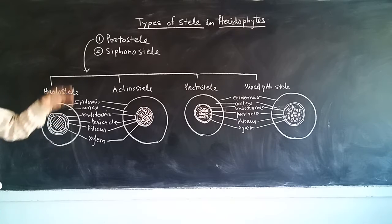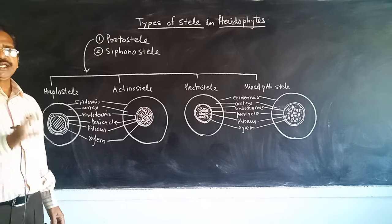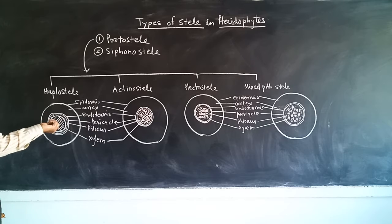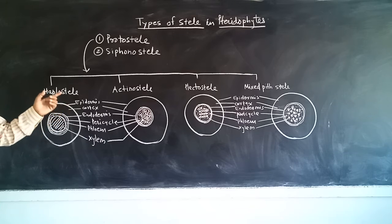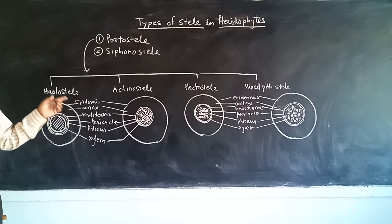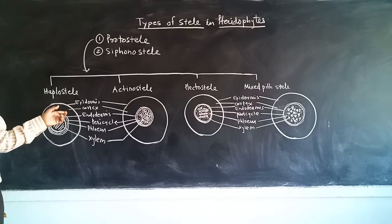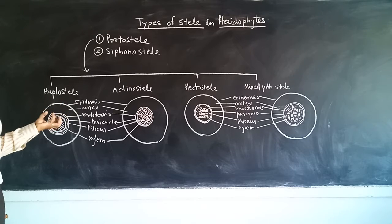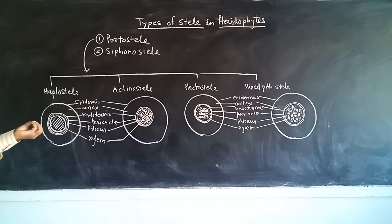In the case of protostele, the pith is totally absent. Instead of pith, in the center, there is a presence of xylem element. It gets surrounded by phloem, then pericycle, endodermis, and outward cortex and epidermis. This simple haplostele protostele is found in the fossil plant Rhynia as well as Selaginella.